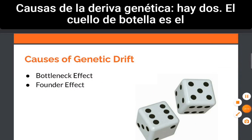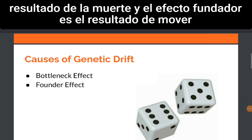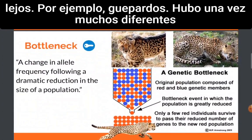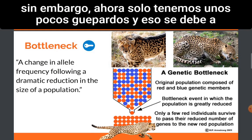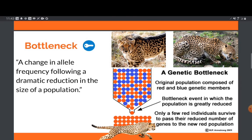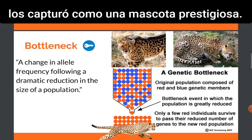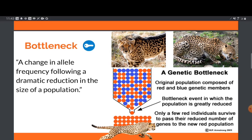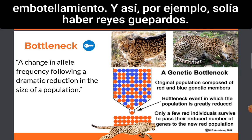There are two causes of genetic drift. Bottlenecking is the result of death, and founder effect is the result of moving away. For example, cheetahs — there once were many different varieties of cheetahs with many different colors of coat. However, now we only have a few cheetahs, and that is because of bottlenecking. People hunted the cheetah for its fur pelt, and they also captured them as a prestigious pet. And so there are very few left, and this has resulted in a bottleneck.